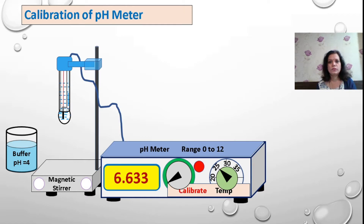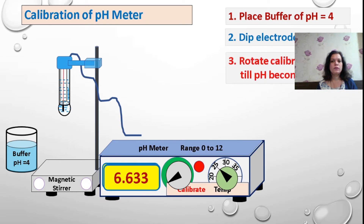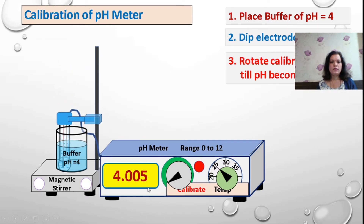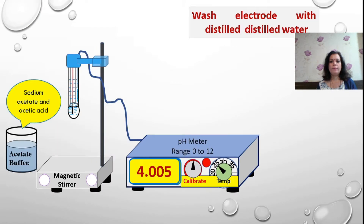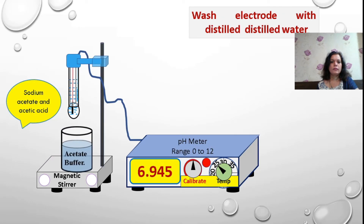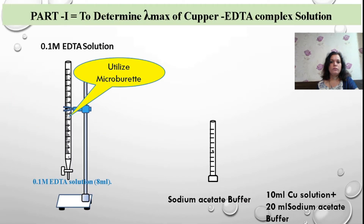When putting the buffer solution, check the pH of that buffer solution as prescribed at 2.2. Standardize the pH meter before use with potassium hydrogen phthalate solution whose pH is constant. You can then place the buffer solution, dip the pH electrode, and check the pH. For the prepared acetate buffer, dip the pH electrode and check the observed pH, then you can utilize this sodium acetate buffer for your further experiment.